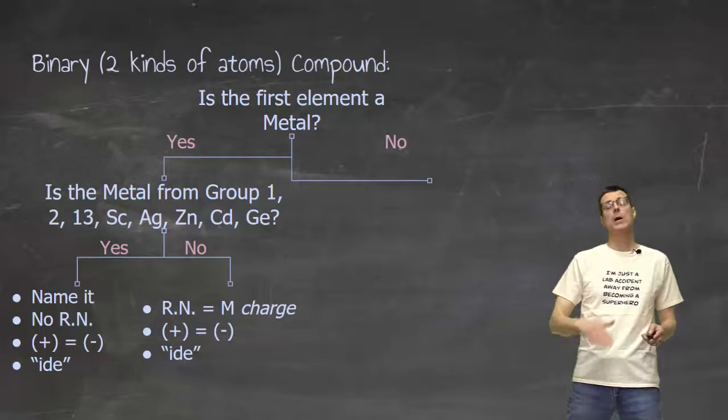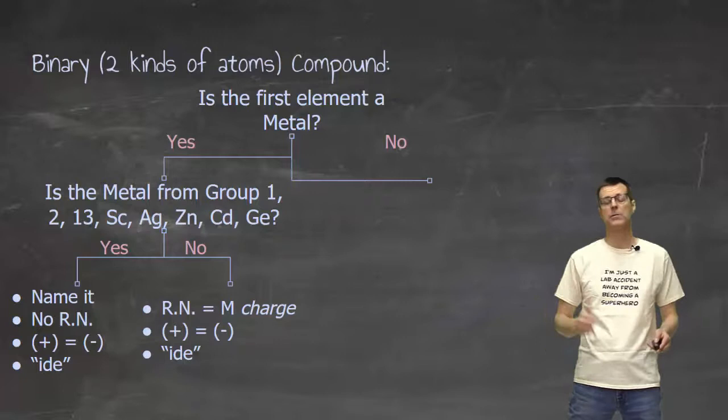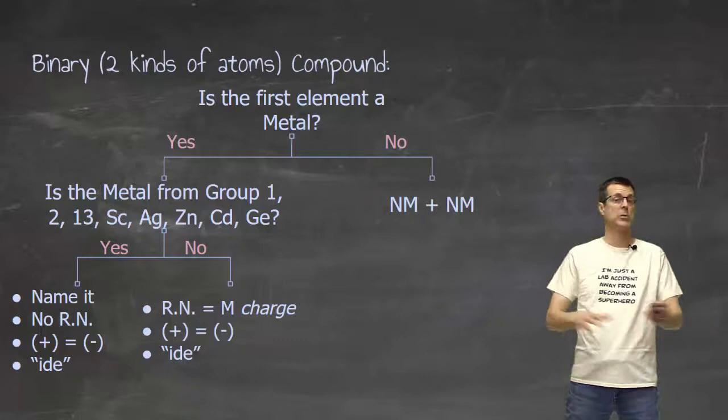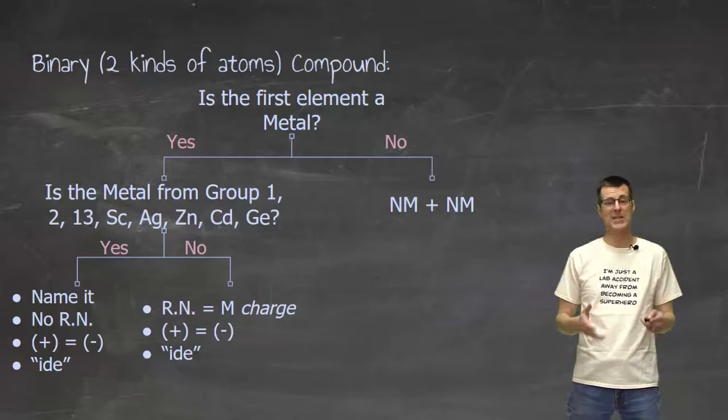Going back to our first question, though, if that first element is a nonmetal, so no to the first question, then I'm doing something different. And because nonmetal nonmetal compounds don't have charges, I don't really have a way to easily predict what the formula is likely to be. So I usually end up needing either the formula or the name.